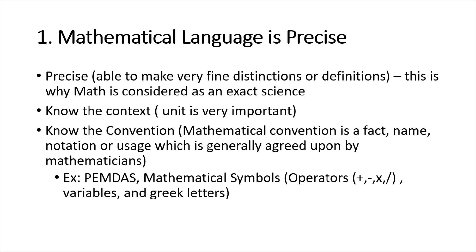Mathematical convention is a fact, name, notation, or usage which is generally agreed upon by mathematicians. For example, PEMDAS — we use PEMDAS as a sequence of operations to be used in a given mathematical formula, expression, or sentence. We also have mathematical symbols: the four basic operators — plus, minus, multiplication, and division — and we also use variables and other Greek letters.